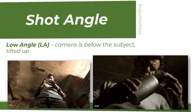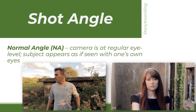In low angle, the subject appears large and formidable with head smaller than normal size. This angle connotes dominance and power to the subject being viewed. This is also known as worm's eye view. And in normal angle, the subject and the viewer appear to be equal as there is no level of elevation in the shot. This is how the teacher narrator should appear on screen.